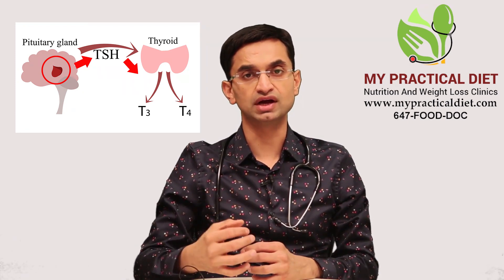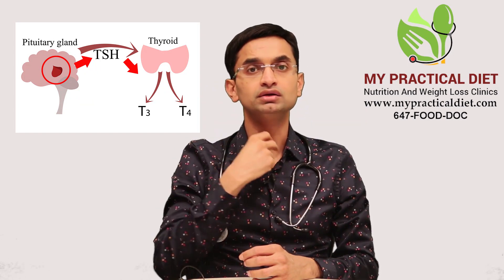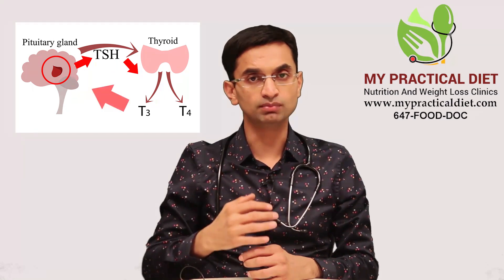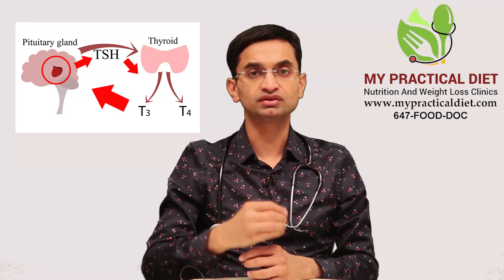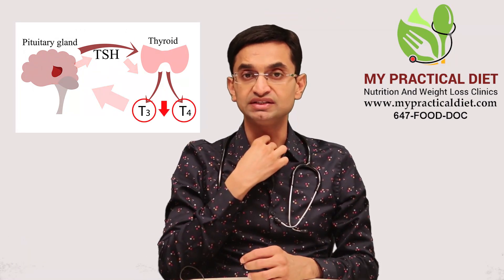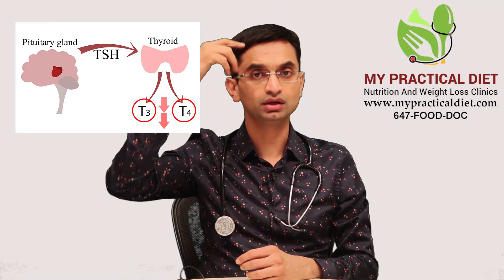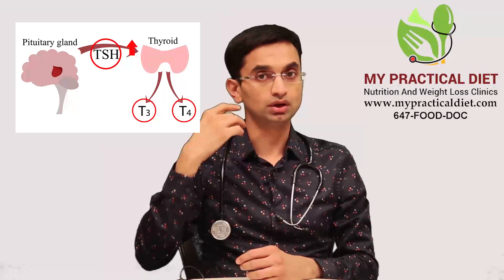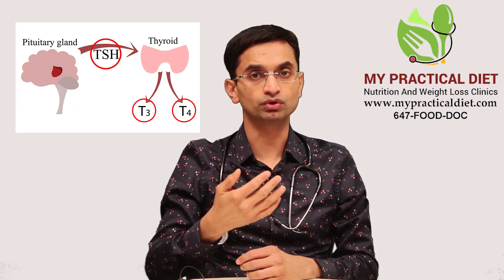The hormones from these two glands — TSH from the pituitary gland and thyroid hormones T4 and T3 from the thyroid gland — circulate in the blood in a feedback loop and affect the levels of each other. For example, if the levels of T4 and T3 go down, there is less feedback that goes to the brain and the TSH level goes up.